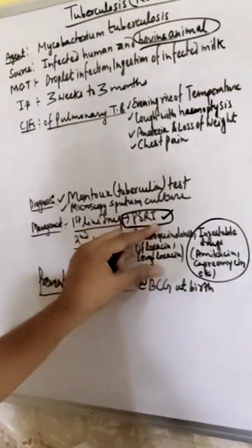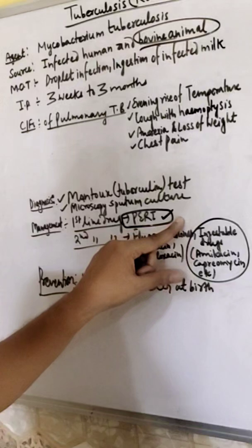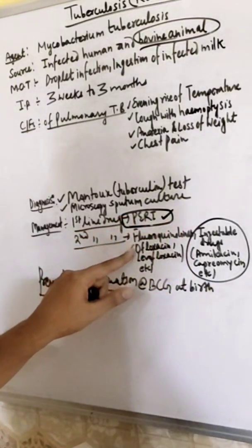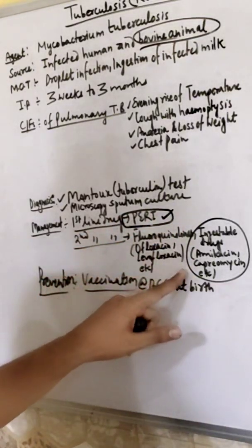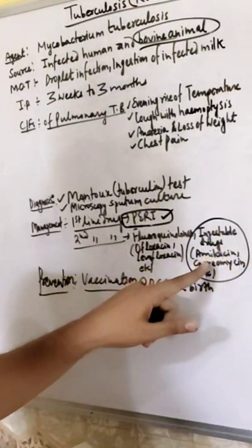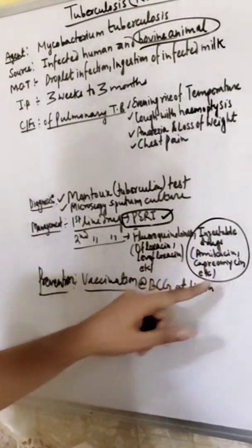And second line drug includes fluoroquinolones. Fluoroquinolones groups such as ofloxacin, levofloxacin, ciprofloxacin. Injectable drugs: amikacin, kanamycin, streptomycin.